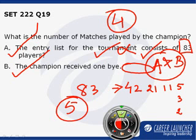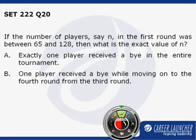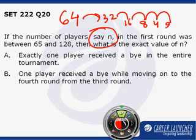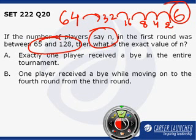Moving to question number 20: if the number of players n in the first round was between 65 and 128, what is the exact value of n? If the number of players were 64, the next rounds would be 32, 16, 8, 4, and 2 — a total of 5 rounds. Since n is between 65 and 128, the total number of rounds has to definitely be 6.